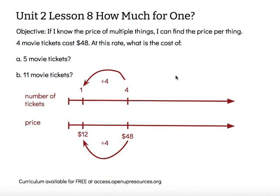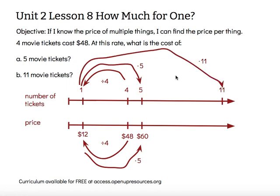Now that I know how much one ticket costs, I can use that amount per one to find the cost for any number of tickets. If I wanted to find the cost of five tickets, I would take the cost of one ticket and make it five times bigger — $12 times five — so five tickets would be $60. If I wanted 11 tickets, I would make the price per ticket 11 times bigger, and 11 times $12 is $132. So five movie tickets would cost $60, and 11 movie tickets would cost $132.